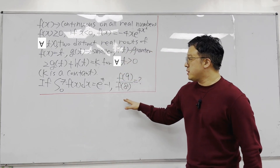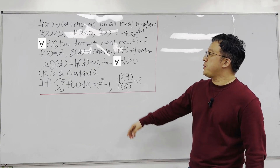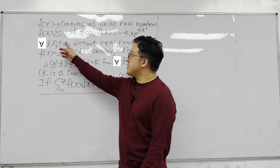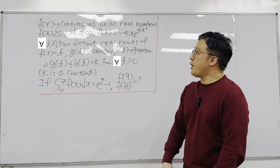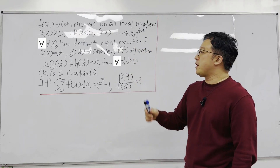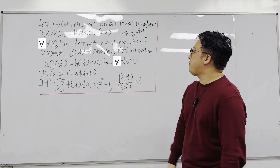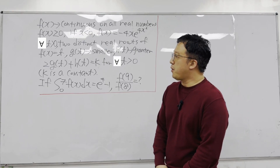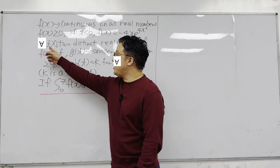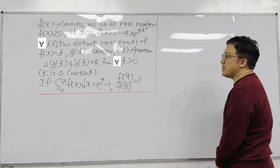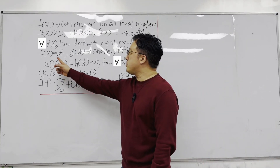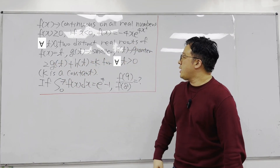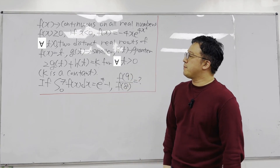Based on the description of the question, f(x) is continuous in all real numbers and f(x) is greater than or equal to zero. If x is a negative number, then f(x) equals negative x times e to the power of 4x squared. For all positive t values, there are two distinct real roots of f(x) = t. We call g(t) as the smaller root and h(t) as the greater root.